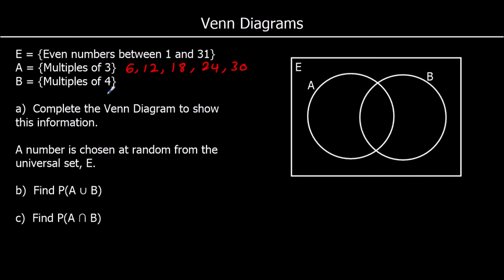And the multiples of 4, they're all even. So 4, 8, 12, 16, 20, 24 and 28. So let's see what's in both circles. So what numbers are in multiples of 3 and multiples of 4? So they've both got a 12, so that goes in the middle. And they've both got 24, so that goes in the middle.